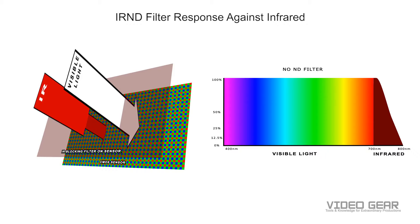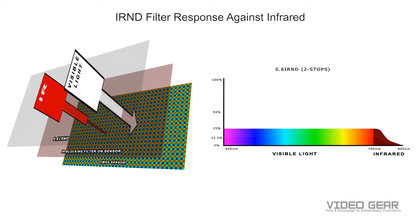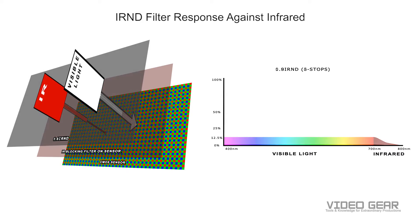In contrast, IR ND filters decrease light in both visible and infrared parts of the spectrum. If we look at how an IR ND filter works, we see that the visible and infrared light are decreased the same amount from one stop to two stops to three stops all the way down to six stops. With this type of filter, the camera's infrared blocking filter is typically enough to avoid any issues with IR pollution.